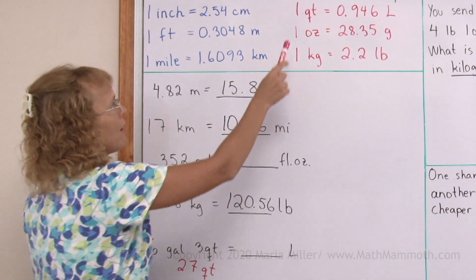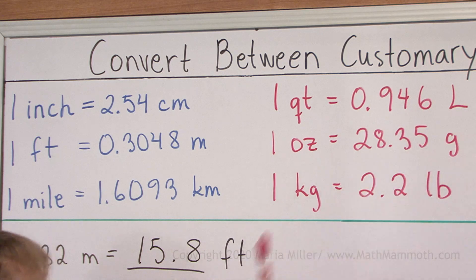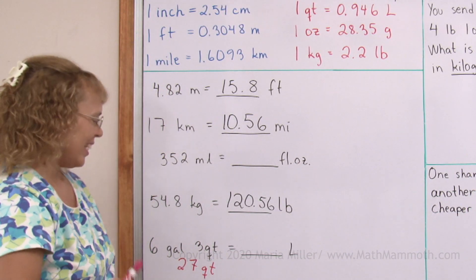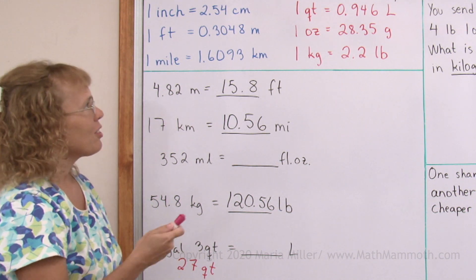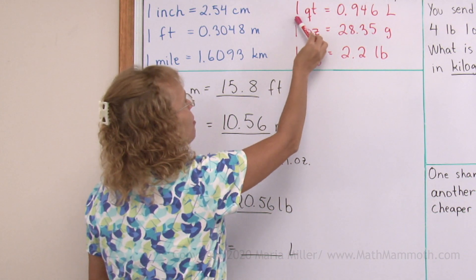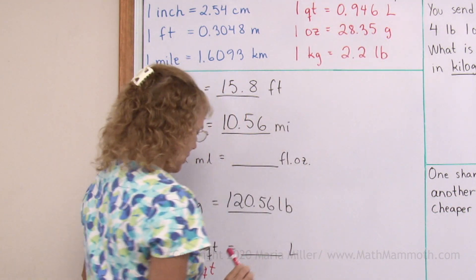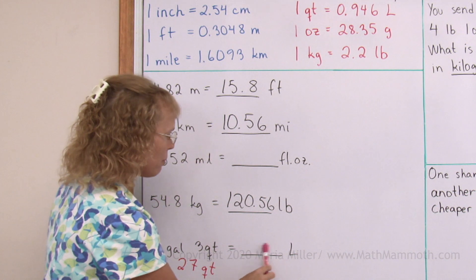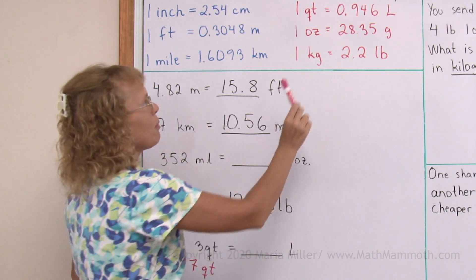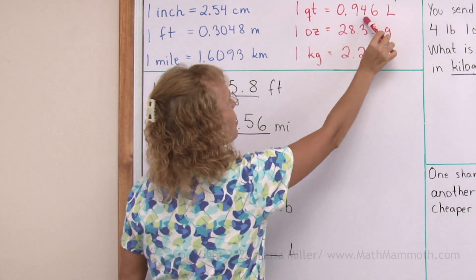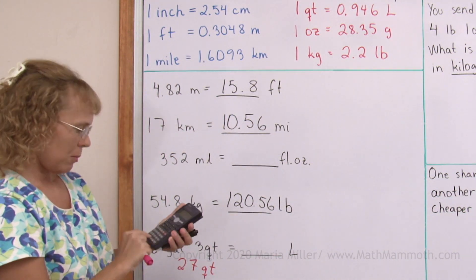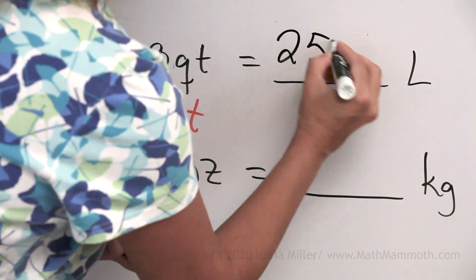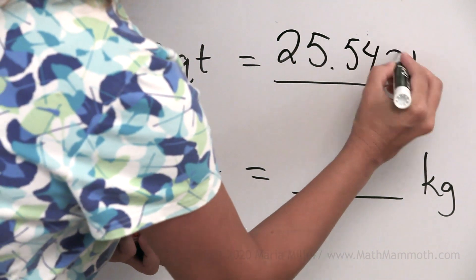And now since I have the one quart equals so many liters, 27 quarts equals 27 times the conversion factor in liters. Or you can think over here, the number for quarts is bigger than the number for liters. And so I need to get a little bit smaller number here, which will work when I multiply by this number, because this number is less than one. Okay, 25.542 liters.